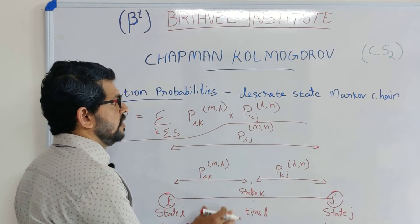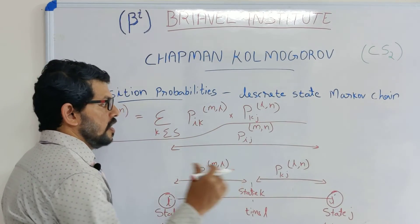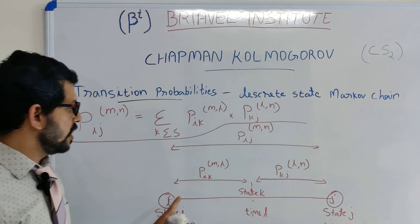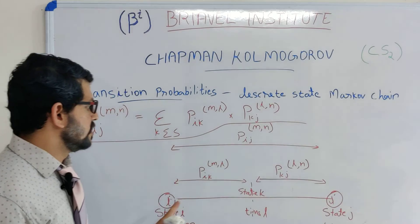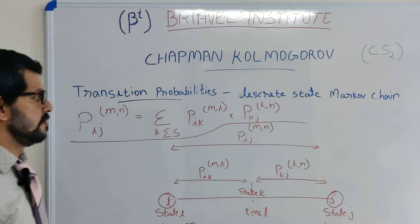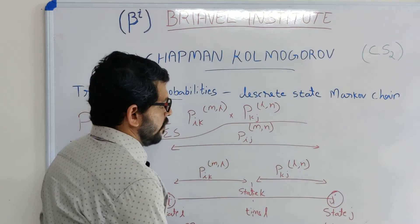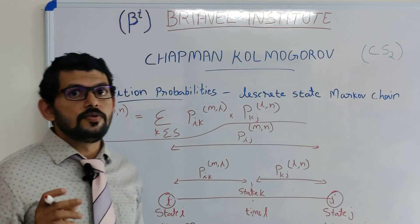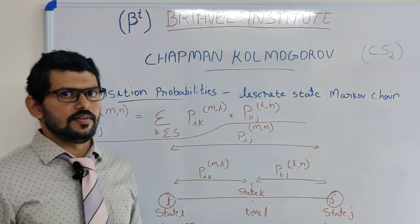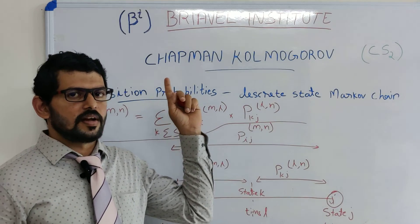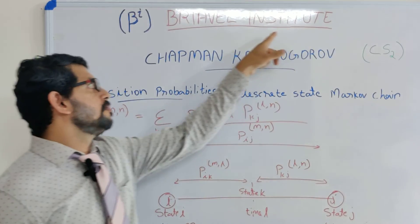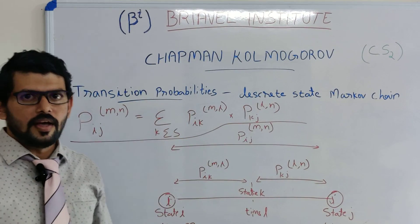This concept is needed in the next chapter on backward and forward equations. If you want to know more about the Chapman-Kolmogorov equation, kindly visit our website and attend further classes. Our website address is Braiwell Institute at www.braiwellinstitute.com. Thank you.